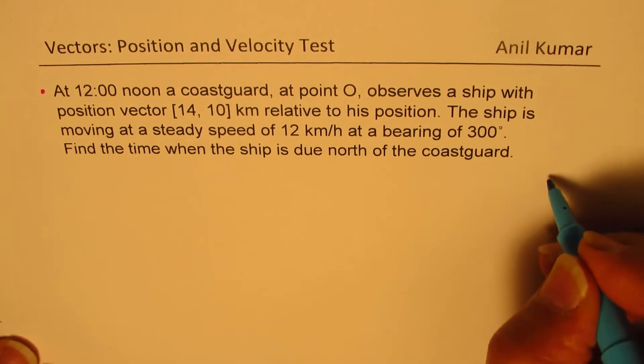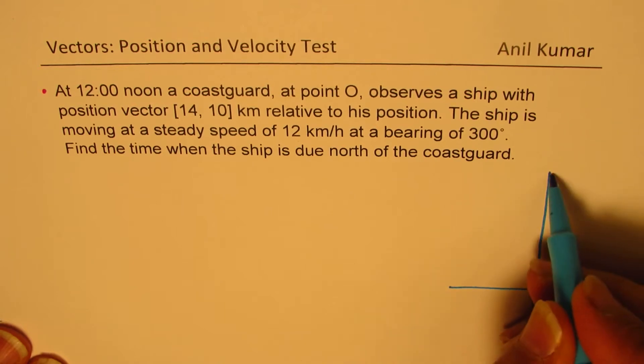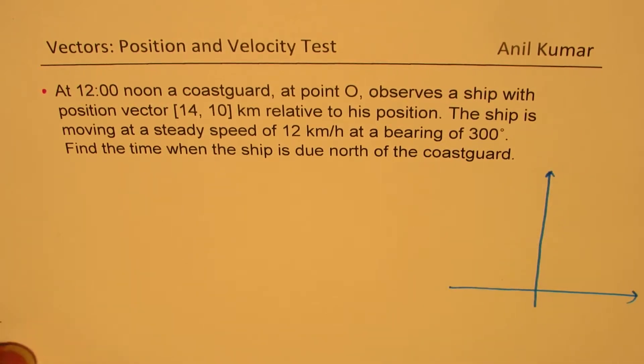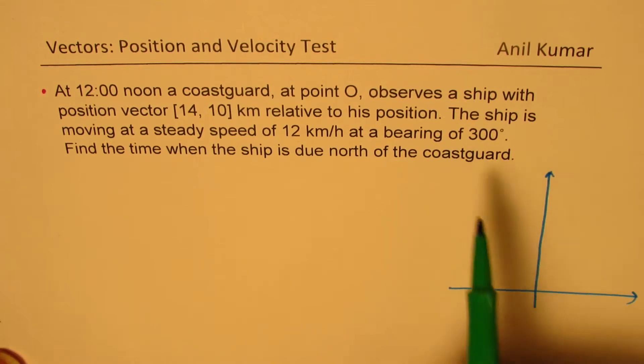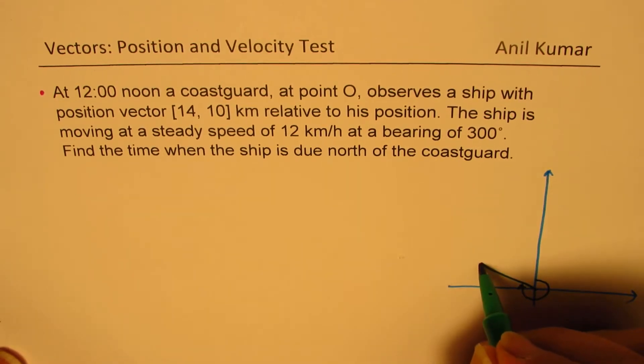Let's try to understand the situation here. Everything is in the positive quadrant. We're not making it to scale, but approximately. The ship is moving in the direction with bearing of 300, so it will be kind of like this.